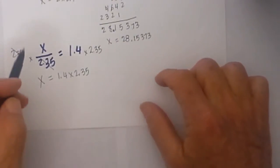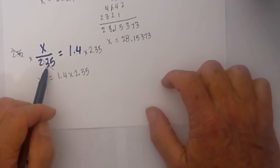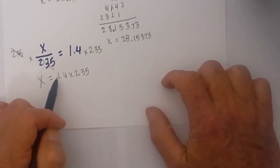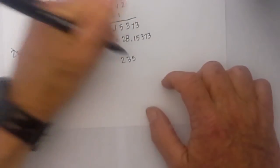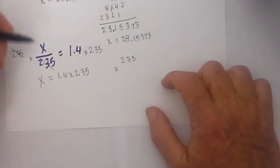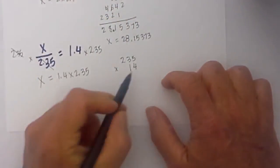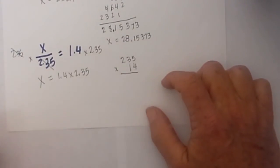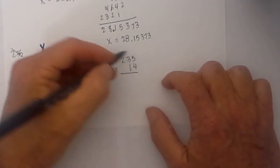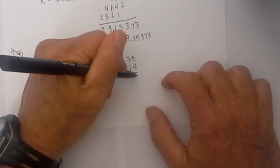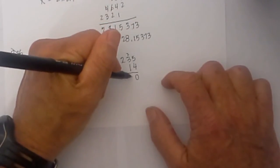What I have done since we have a fraction is I have multiplied each side by 2.35, that gives us x is equal to 1.4 times 2.35. I then rewrite this to 235 times 1.4, and you can put the smaller number on top, I just think it is easier if you put the larger number on top. If you will notice right now I am not worried about a decimal, I will do that at the end.